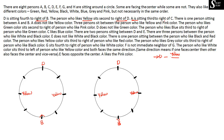Next: A is sitting third to the right of C, so C's third right must be A. Note that A's third left need not be C because we are not sure of directions. We cannot substitute this yet. Also, there is one person sitting between A and B — between A and B there must be a gap of one person. We keep both pieces of information on hold.